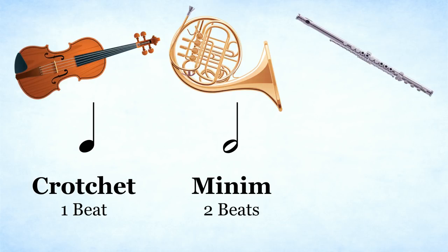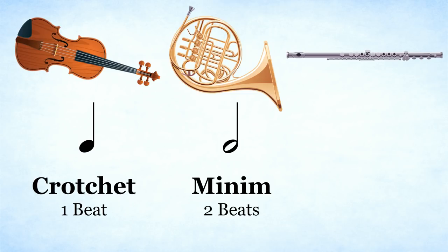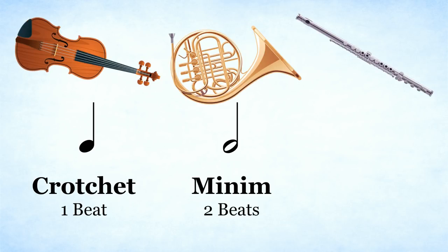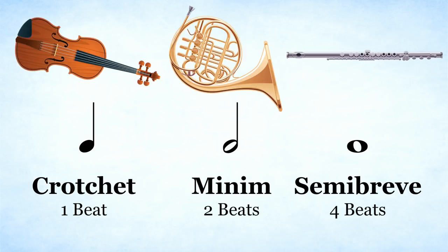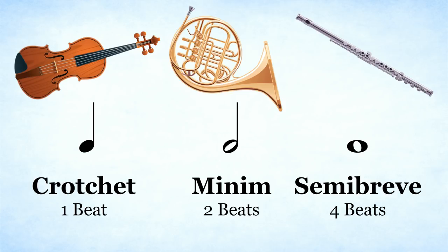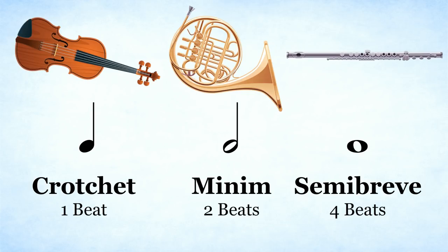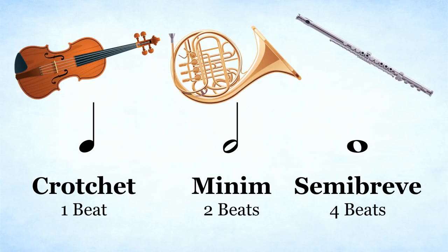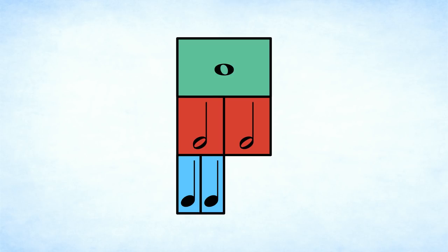Now the flute has joined in and its notes are even longer — each of its notes are four beats long. The flute's notes look like this. This is a semibreve and it is worth four beats. A semibreve is played once and held for a count of four. So you can see two crotchets fit into a minim, and two minims fit into a semibreve, meaning a semibreve is worth four crotchets.